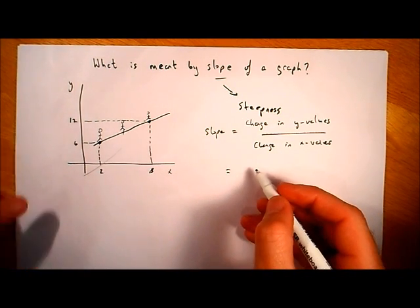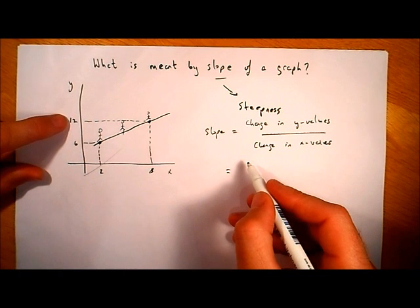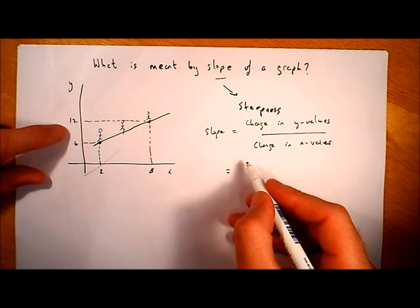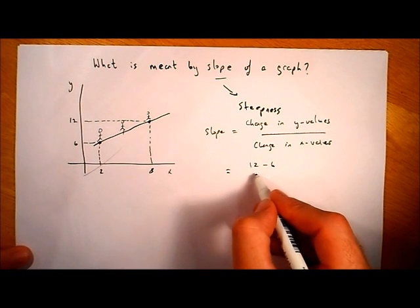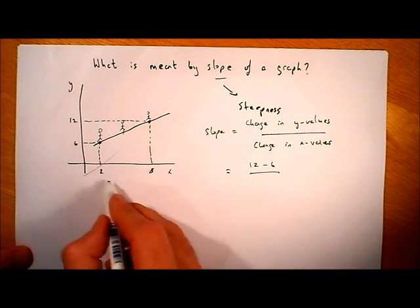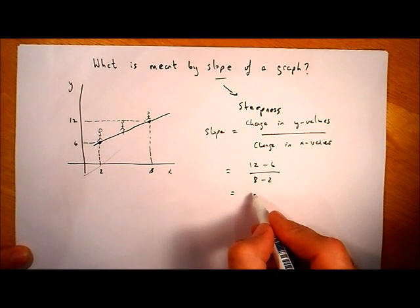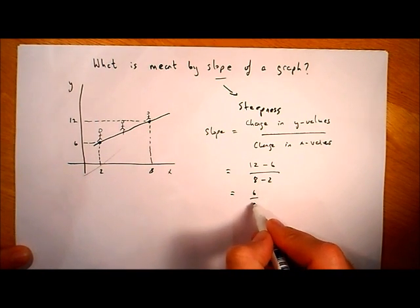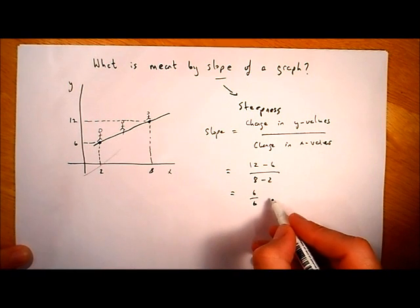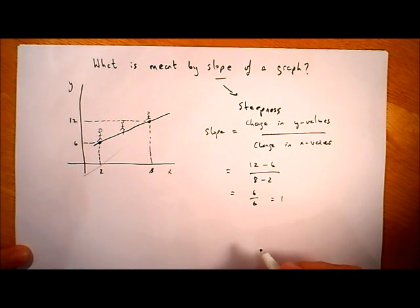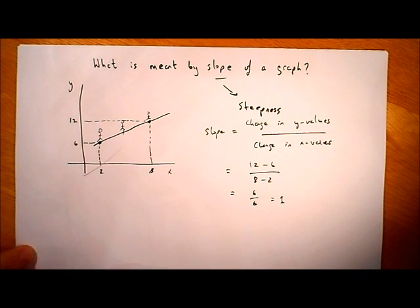To work out the change in the y values, I just go 12 minus 6, which is going to be 6 — the difference between 12 and 6. So we go 12 minus 6 divided by the corresponding change in the x values: 8 minus 2. That gives us 6 divided by 6, so the slope of this line is 1. That's the number that tells us the steepness of that line.